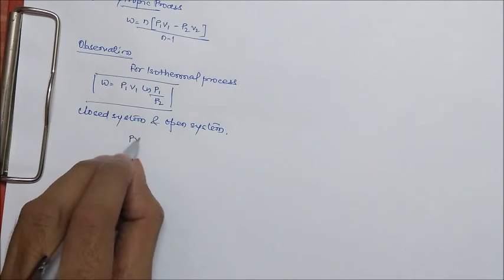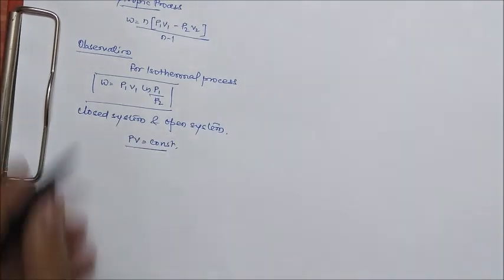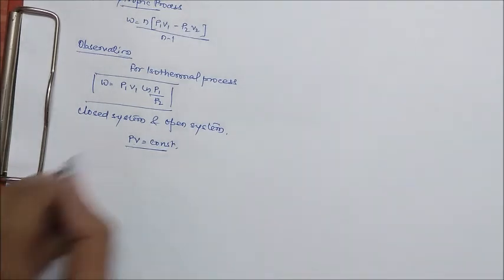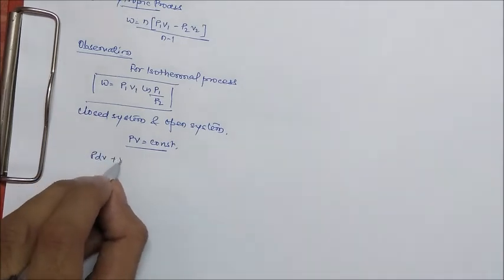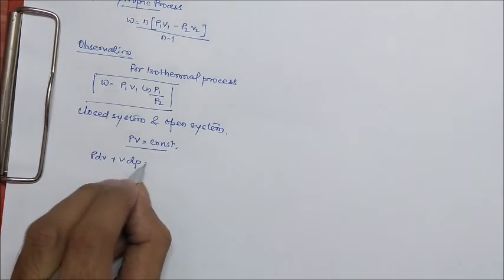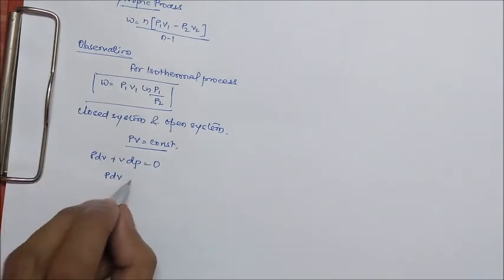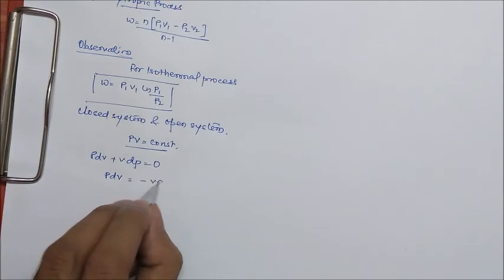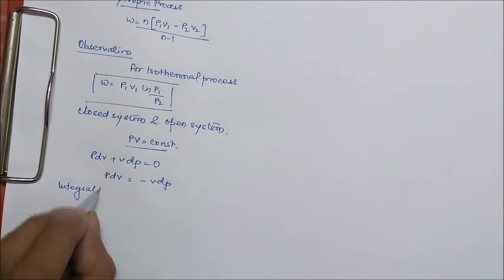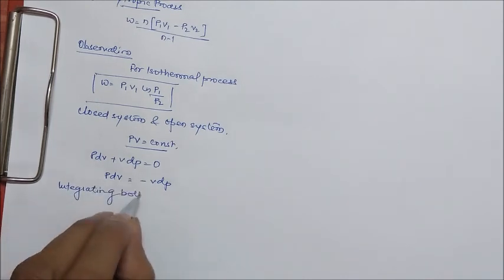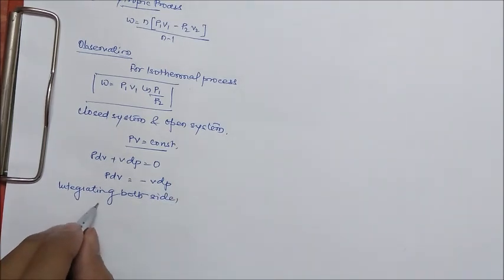PV equals constant. This is the isothermal law. Now, differentiate this: PdV plus VdP equals 0. So we move this to the right hand side: PdV equals minus VdP. Now, integrating both sides.